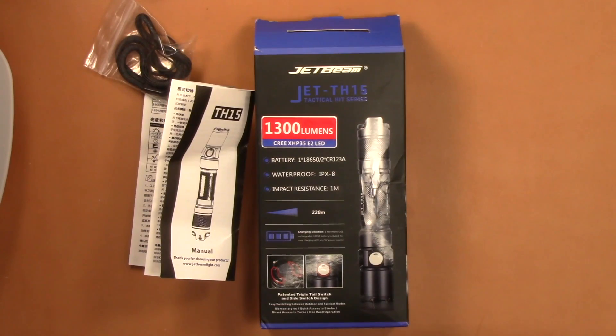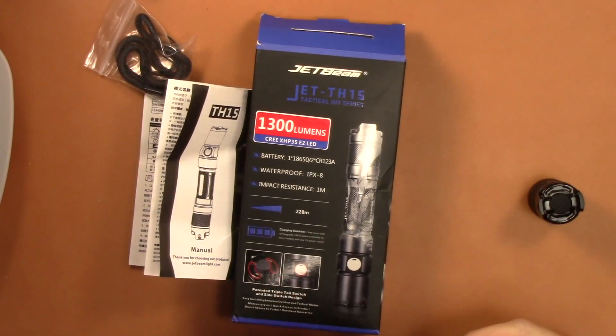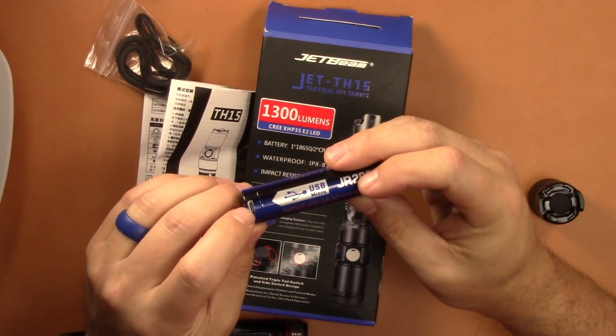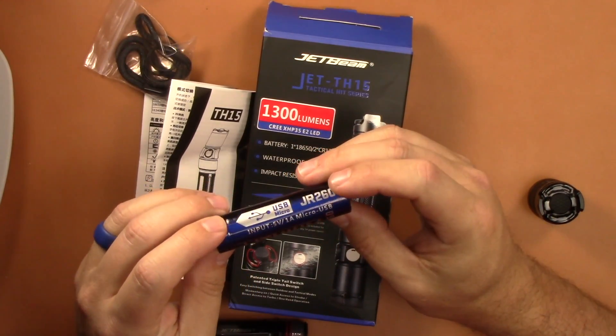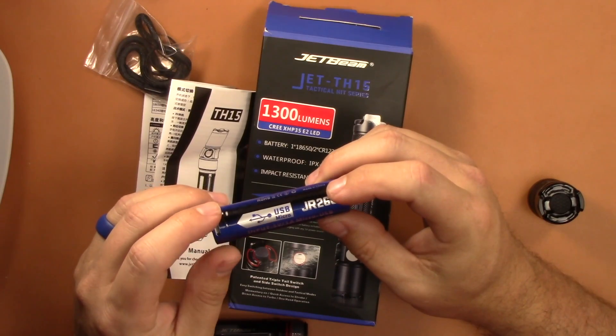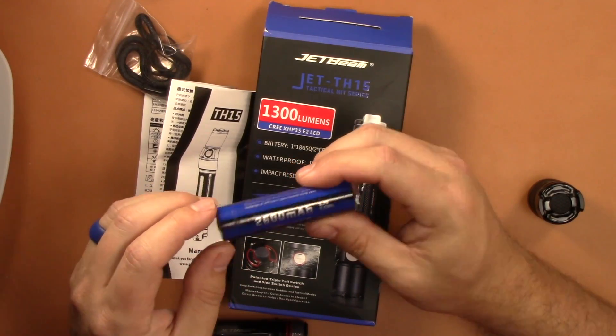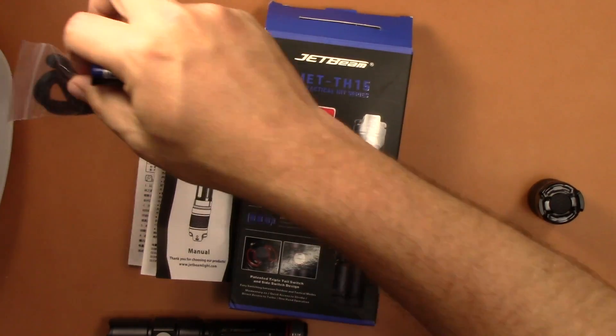It comes with a battery and it is a rechargeable battery. It's one of the micro USB rechargeable batteries that you plug in the charger there. It is a 5 volt output, 2600 milliamp. It's kind of low on this 18650.